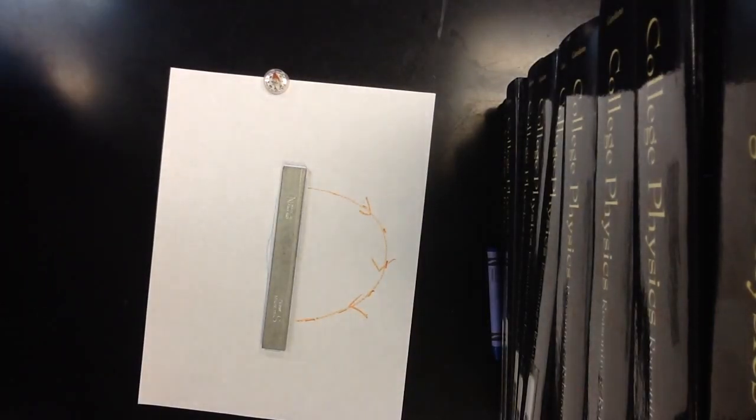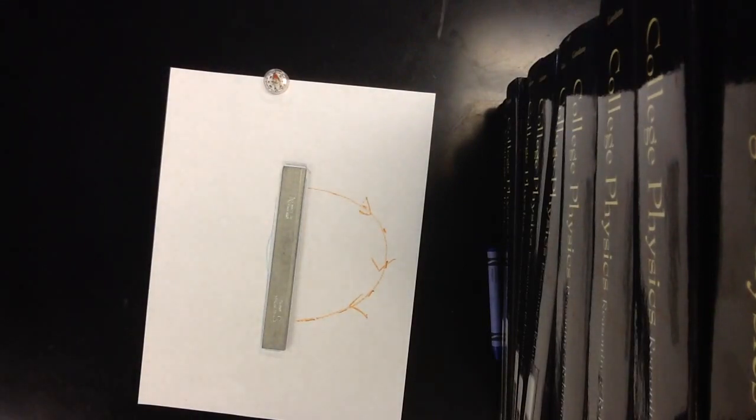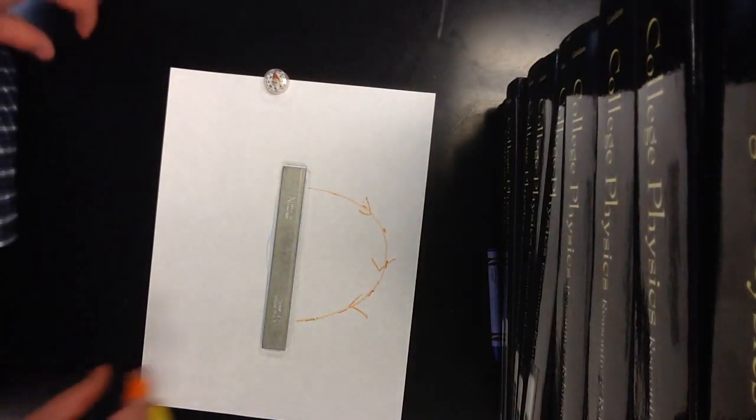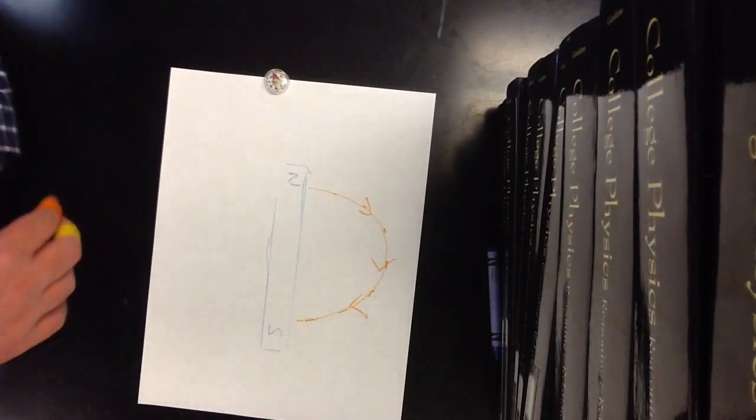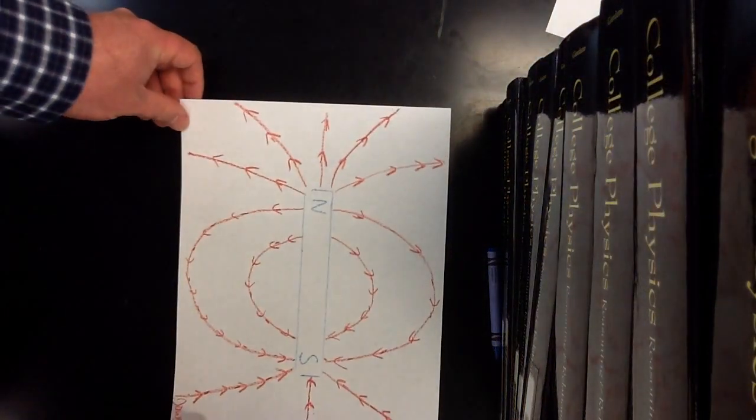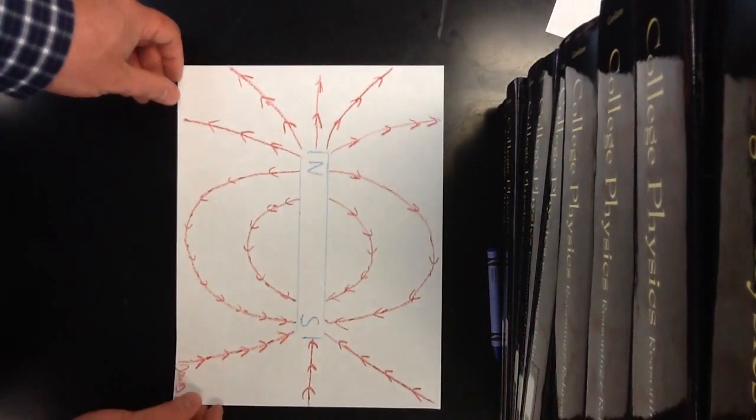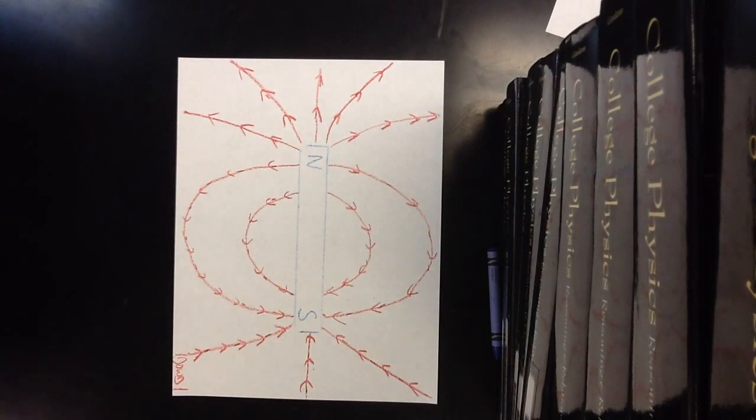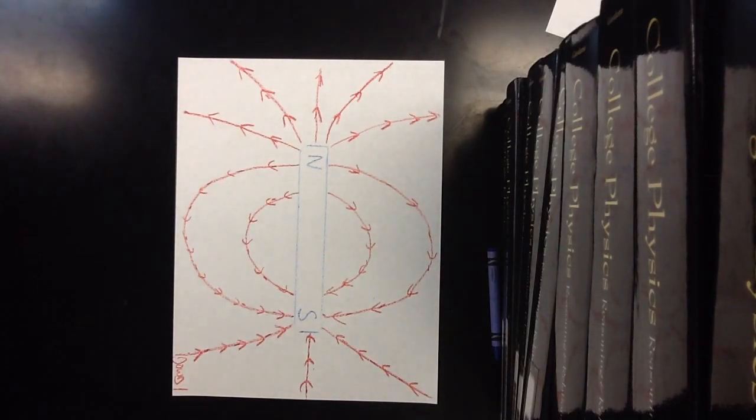So I'm not going to sit and make the entire map here. I've done this for all of the different ones I asked you to do in class. So here's the complete field for one magnet. And we can see some patterns here.